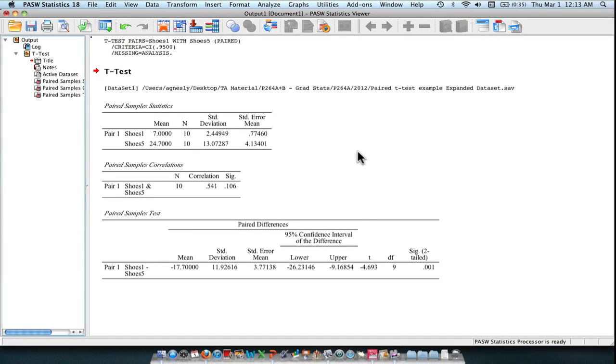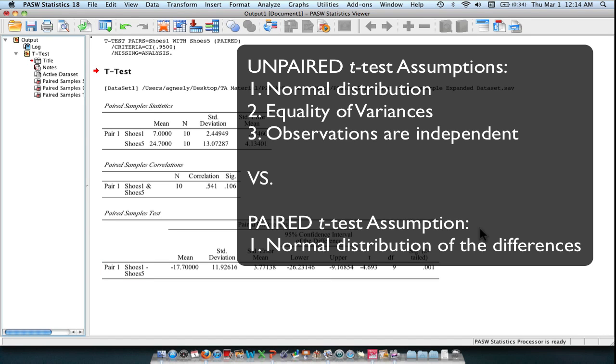So what you get here is your statistics, your descriptive statistics, your correlation between the two variables, and as well as your paired samples t-test output. The biggest difference between this output and an unpaired t-test output is that you will not see the Levene test for equality of variances. You see here we only have one option as to what kind of output we're looking at.